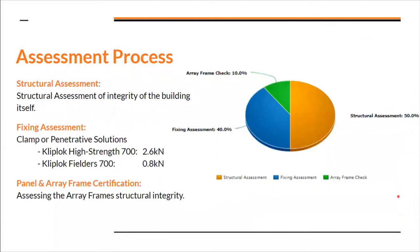Our assessment process breaks down into three main components. The first, about 50% of it, is the structure itself — the steel purlins, rafters, and timber rafters and battens, and their capacity and deflection. The second is the fixing assessment — the connection between your array frame and the roof sheet. Lastly, not really relevant to today's presentation, is the array frame itself and its suitability for the site.